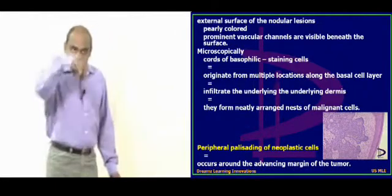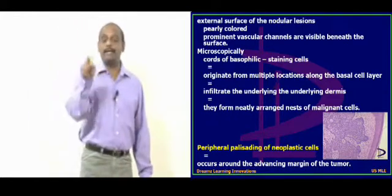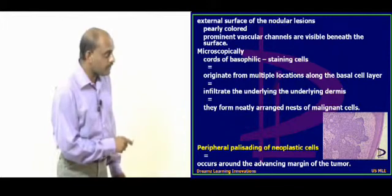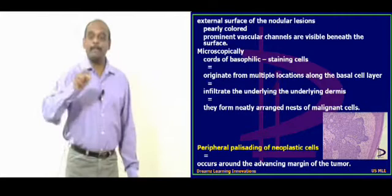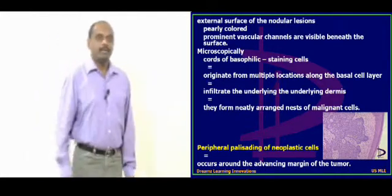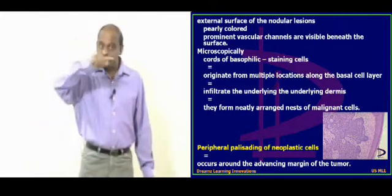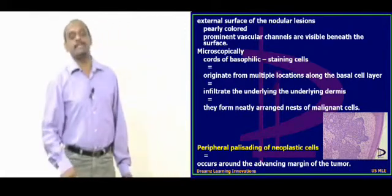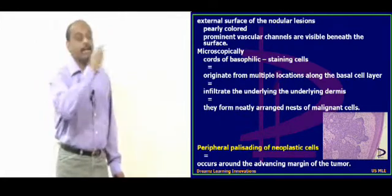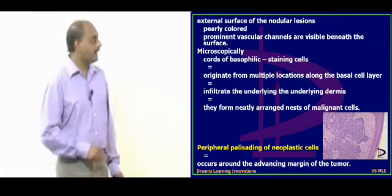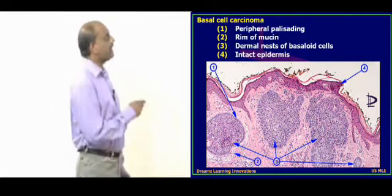Along the basal cell layer, they will be infiltrating the underlying dermis and form neatly arranged nests of malignant cells. This identification of nests of cells is very important before you write your final histopathology report as a basal cell carcinoma. In advanced stages, they develop peripheral palisading — peripheral layering of the neoplastic cells — with nests infiltrating the dermis, involving the stratum basale, with basophilic staining.